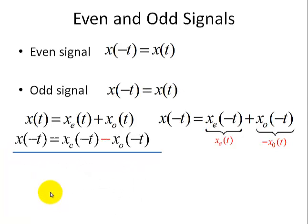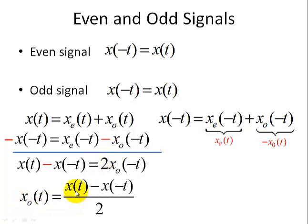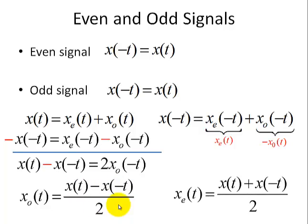Now let's look at the odd function. This time we're going to subtract the equations, and the even functions go away while the two odd functions add up. The minus in the odd functions cancels, and we can solve for x0 of t, which is the difference between x of t and its reflection x of minus t, divided by 2. And our even function result from earlier is x of t plus its reflection x of minus t, divided by 2 — adding instead of subtracting.